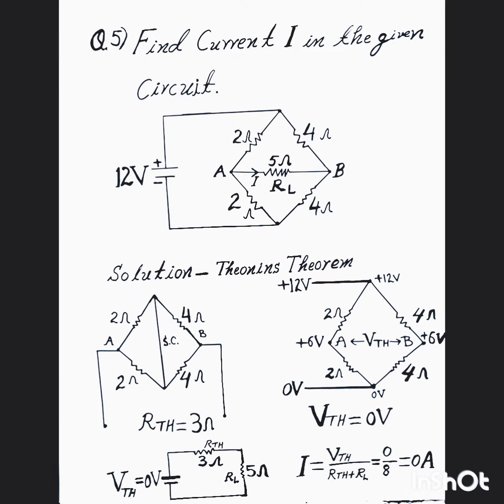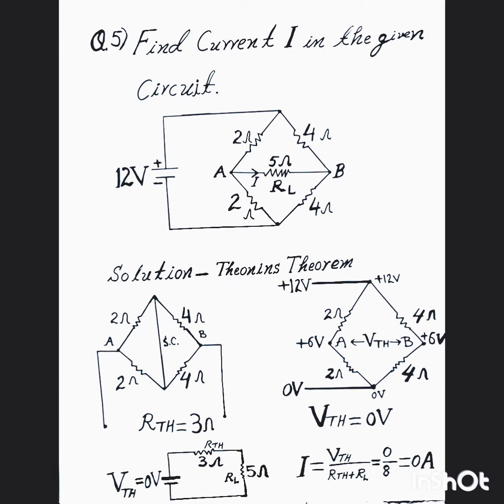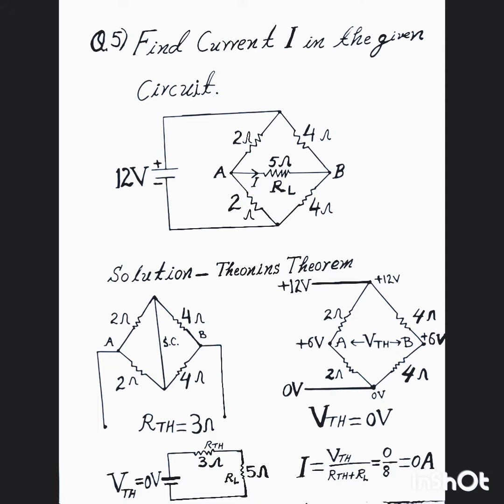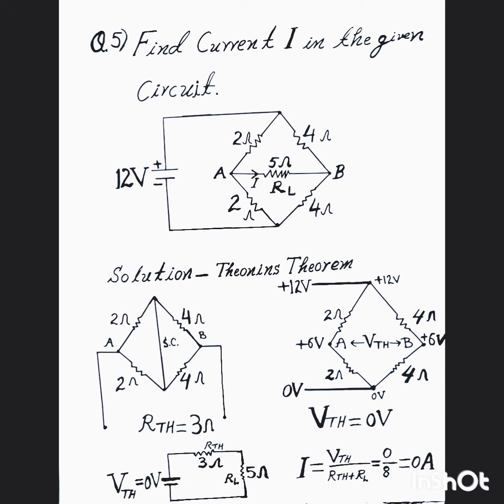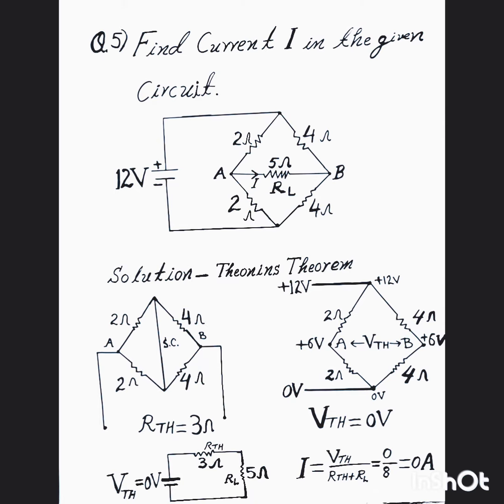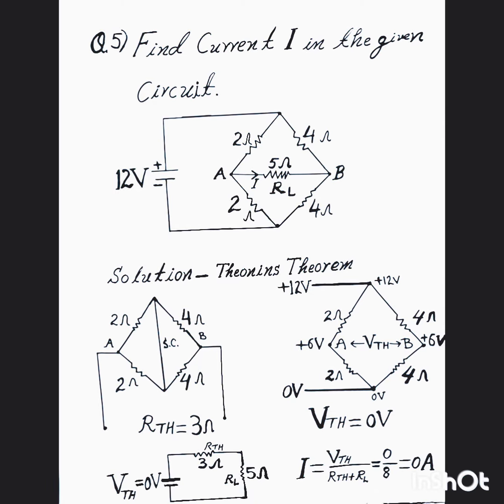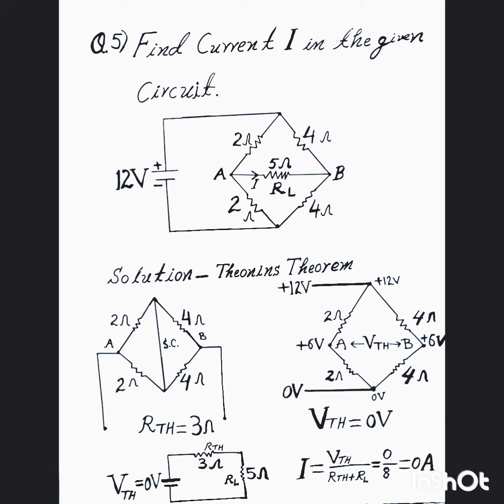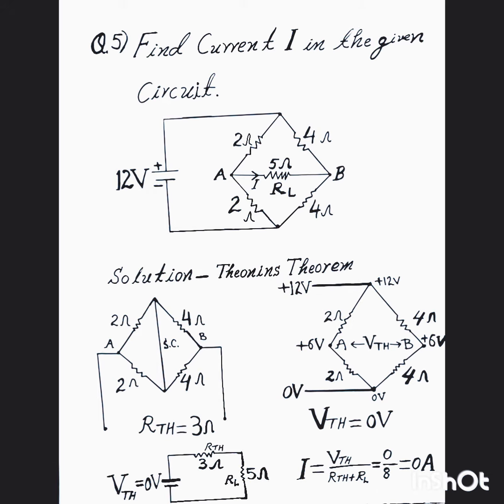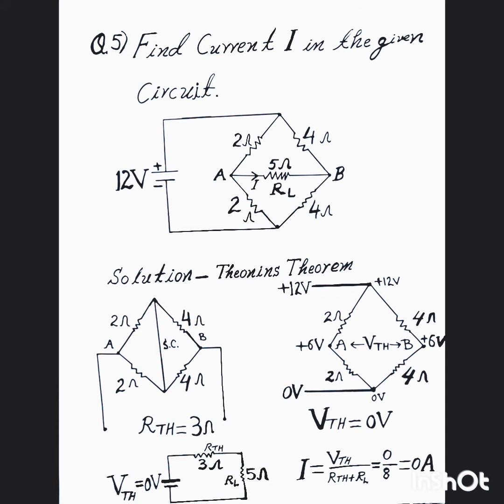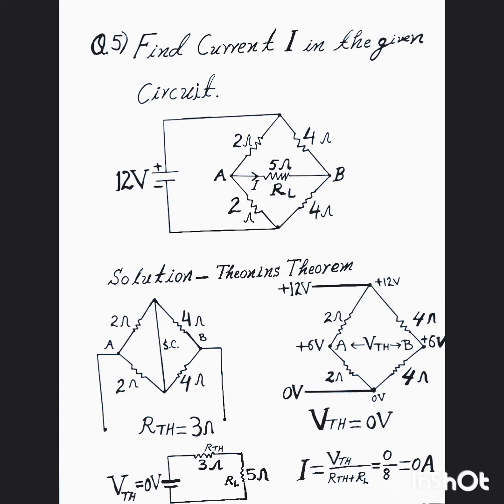Hello, find current I in the given bridge circuit diagram. Solution: we use here Thevenin's theorem. First we will find RTH, Thevenin resistance, by shorting 12 volt supply and opening A and B points for RL load 5 ohm resistor.